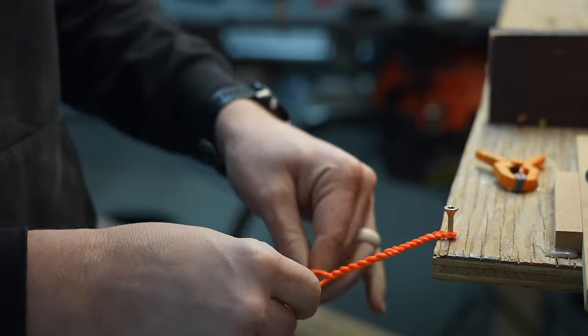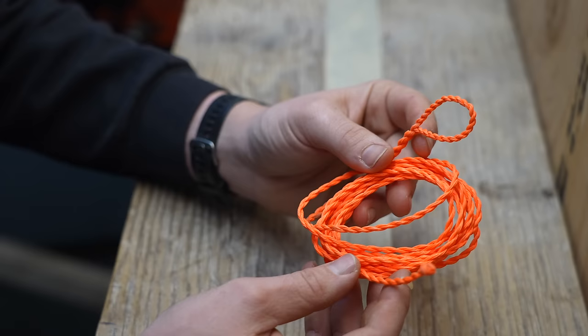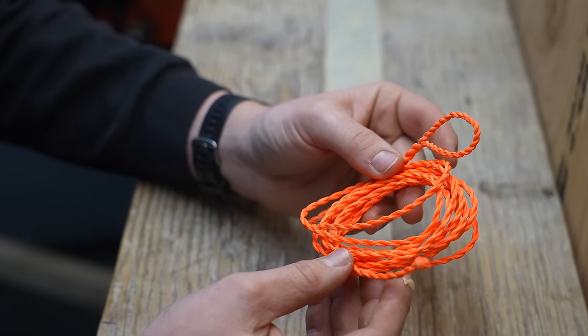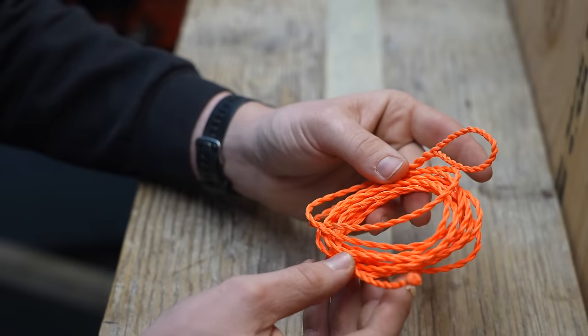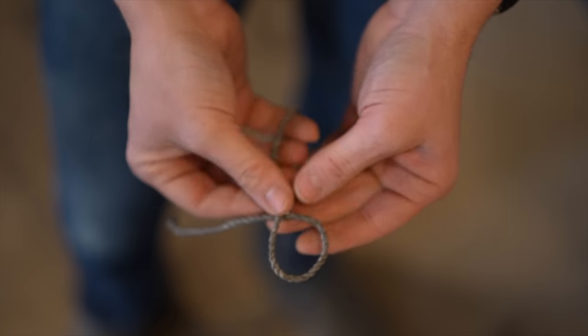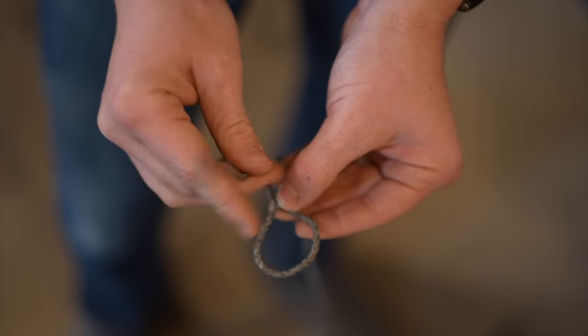Next you'll want to find a tillering string. This is another thing we sell at Shatterproof Archery. You can make your own or use some other cordage if you would like. The nice thing about a really good tillering string is you have an actual bow string loop on this side where this side fades out. And it's an extra long string. So you can tie a knot on this side and start tillering the bow.